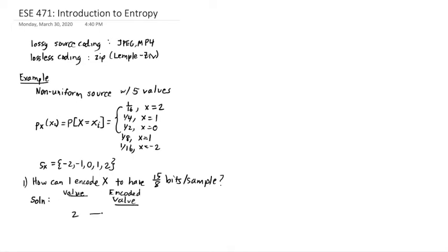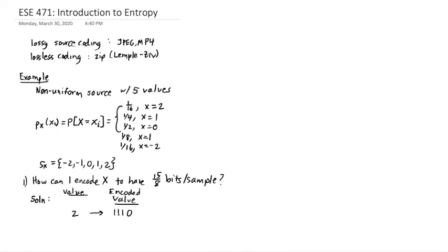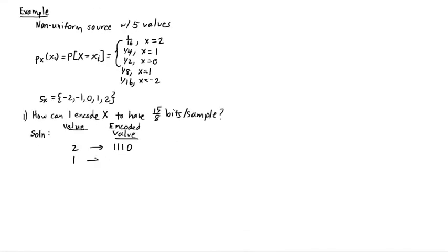If I have five values, I could take three bits and I could assign a unique three-bit pattern to each of these five values. This solution is more efficient. So if I have a two, I'm going to convert that to a 1110, four bits. Then if I have a one, I'm going to encode that to a 10. If I have a zero, I'm going to encode that to just a zero. If I have a minus one, I'm going to encode that to a 110. And if I have a minus two, I'm going to encode that to a 1111.